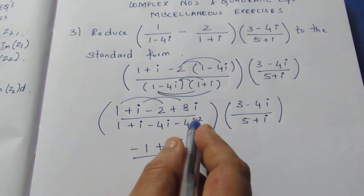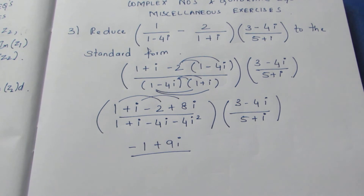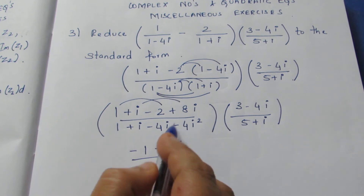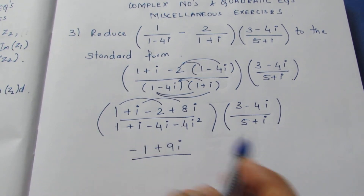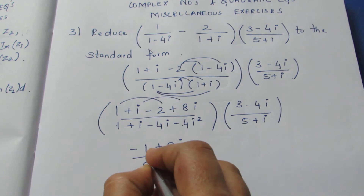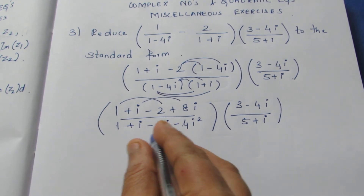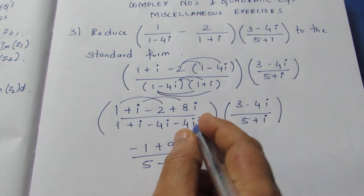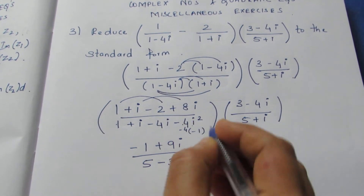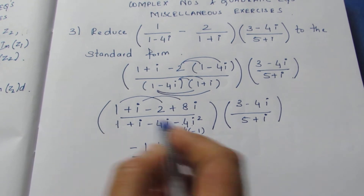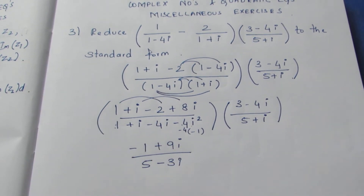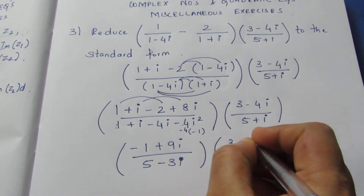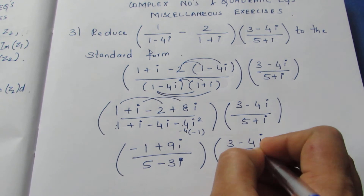In the denominator we know that i² becomes −1. So −1 to −1 will become +4 — skipping a step, it becomes +4. Then +4+1 becomes 5. Solving those two terms I get −3i. So i² is −1, minus 1 × −4 becomes +4, and +4+1 becomes 5. So the first bracket simplifies to (−1+9i)/5. Now the second factor is (3−4i)/(5+i).